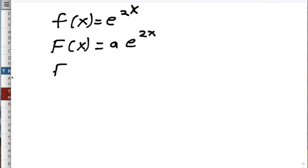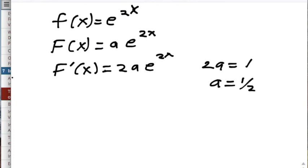Now I simply take f prime of x and I get the derivative is 2 times a e to the 2x. Well for capital F prime of x to equal little f of x, I need that 2a equals 1 or a equals 1 half. Thus I make my capital F of x equal to 1 half e to the 2x and I can use that in solving my problem with the fundamental theorem of calculus.